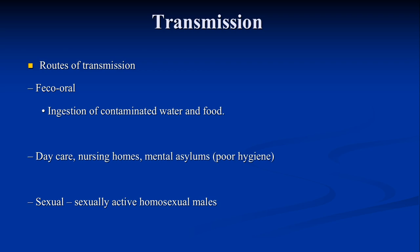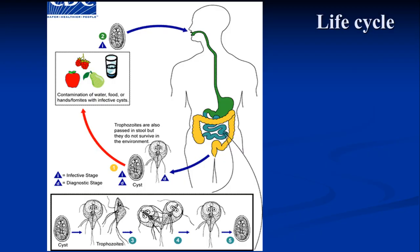Transmission: the route of transmission is the oro-fecal route. It occurs because of the consumption of contaminated food and water. People living in daycares, nursing homes, and mental asylums are at high prevalence because of poor hygiene. The disease is also very common among homosexual individuals.